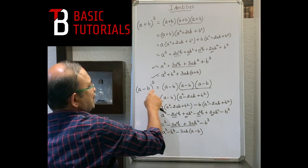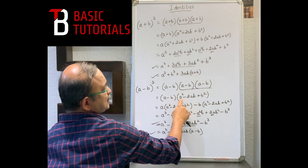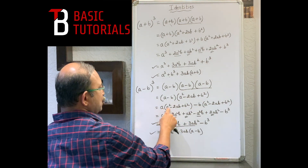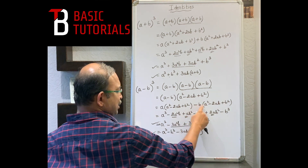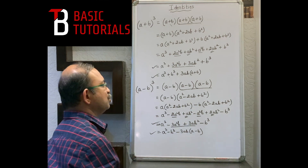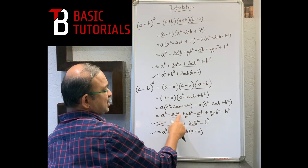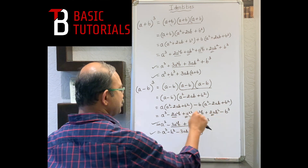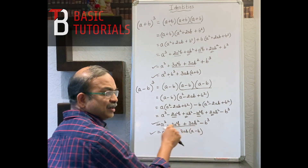For (a-b)³: expand (a-b)×(a-b)². Since (a-b)² = a² - 2ab + b², multiply by (a-b). We get: a³ - 2a²b + ab² - a²b + 2ab² - b³. Collecting like terms: a³ - 3a²b + 3ab² - b³. Separating: a³ - b³ - 3ab(a-b).